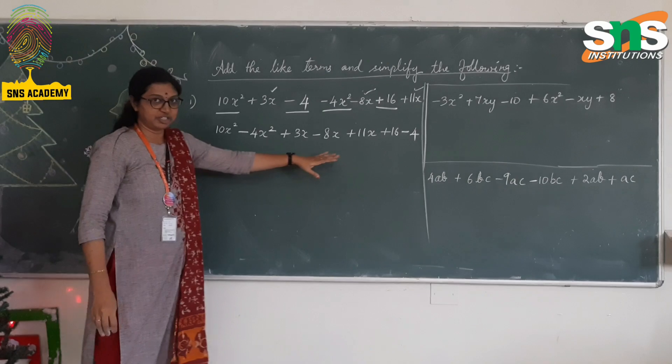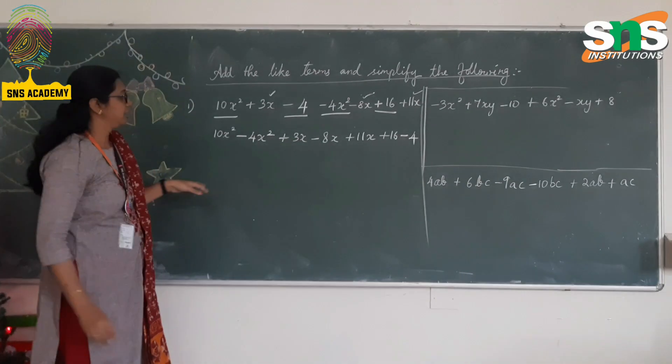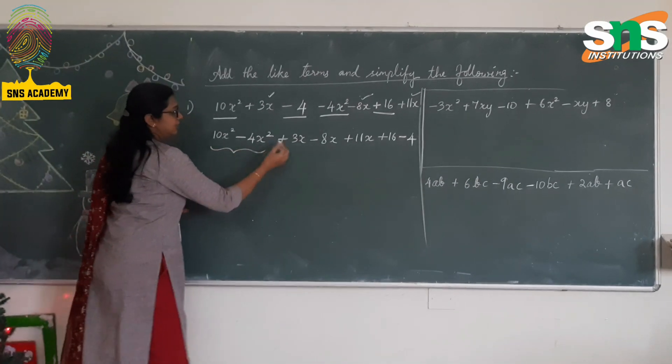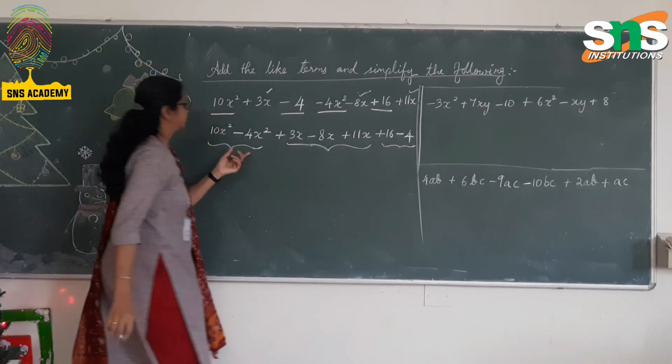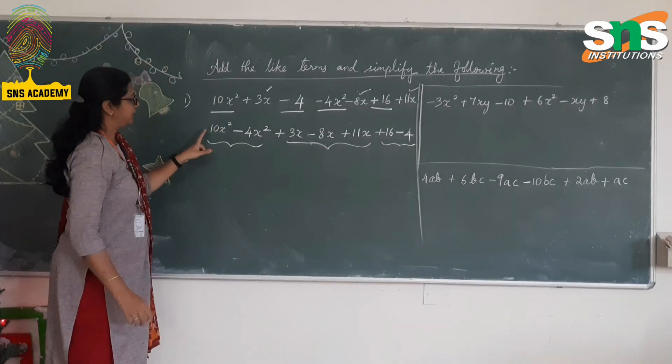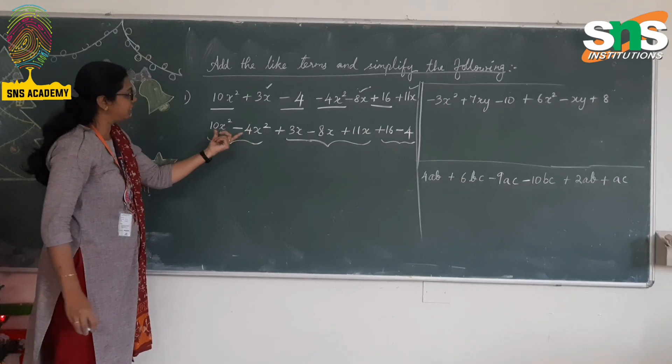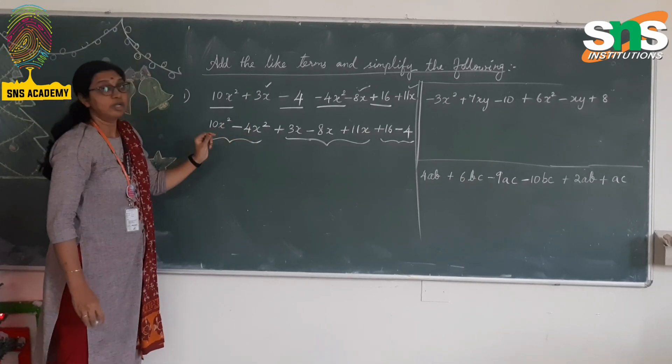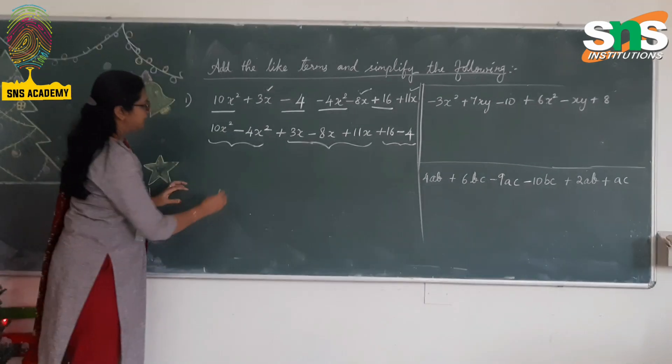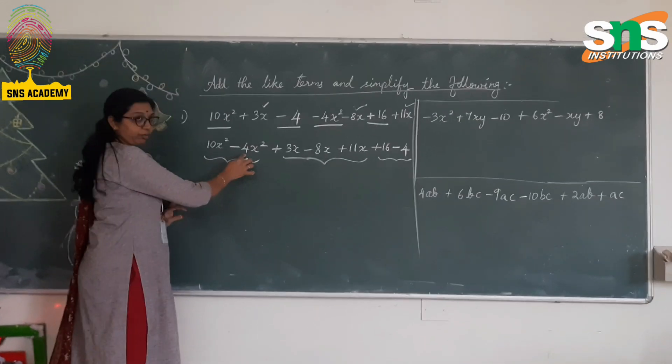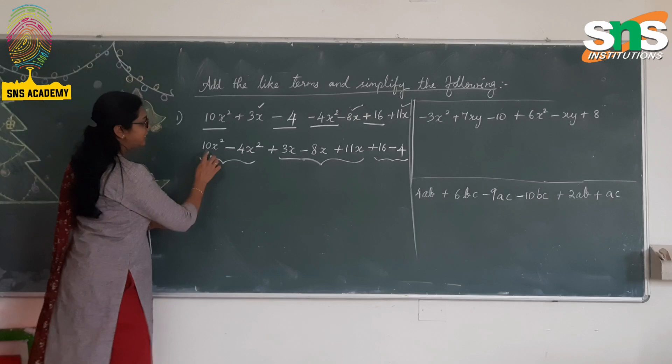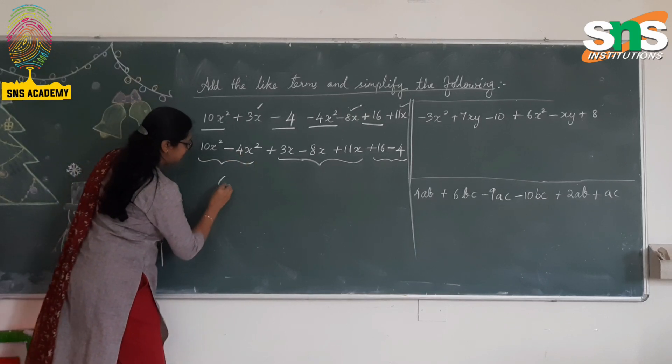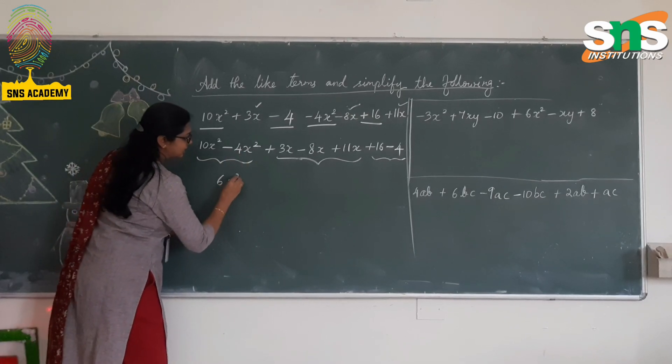Now we have rearranged it according to the like terms. Let us now simplify it. For this x² terms, it is 10 - 4. The like term is x². You have to take the coefficient and add or subtract according to the sign. So it is 10 - 4 = 6x².